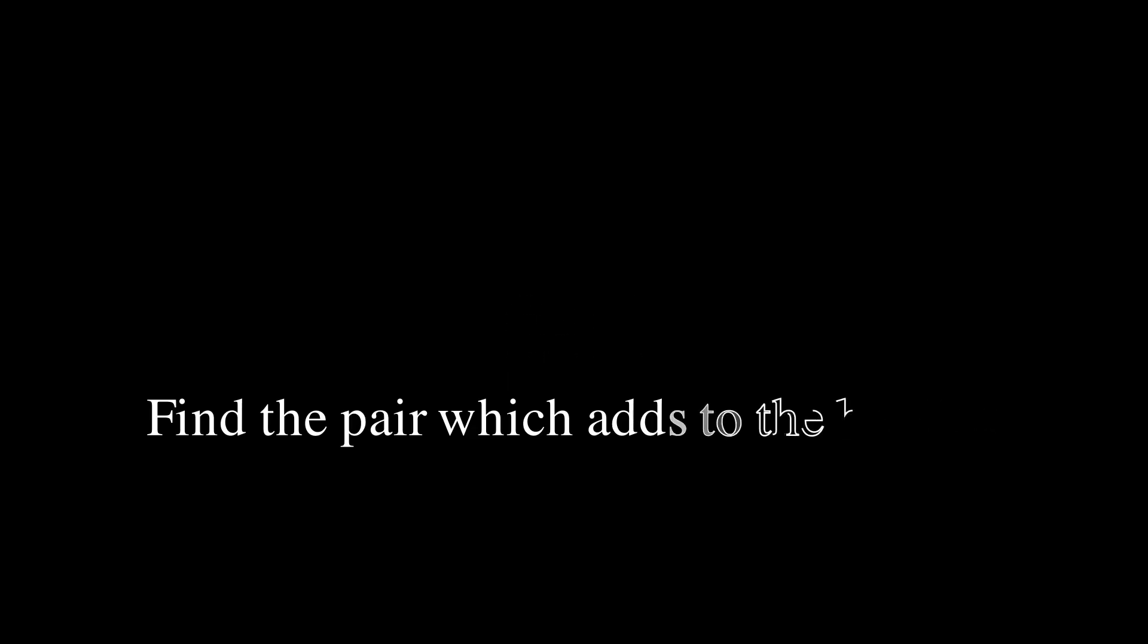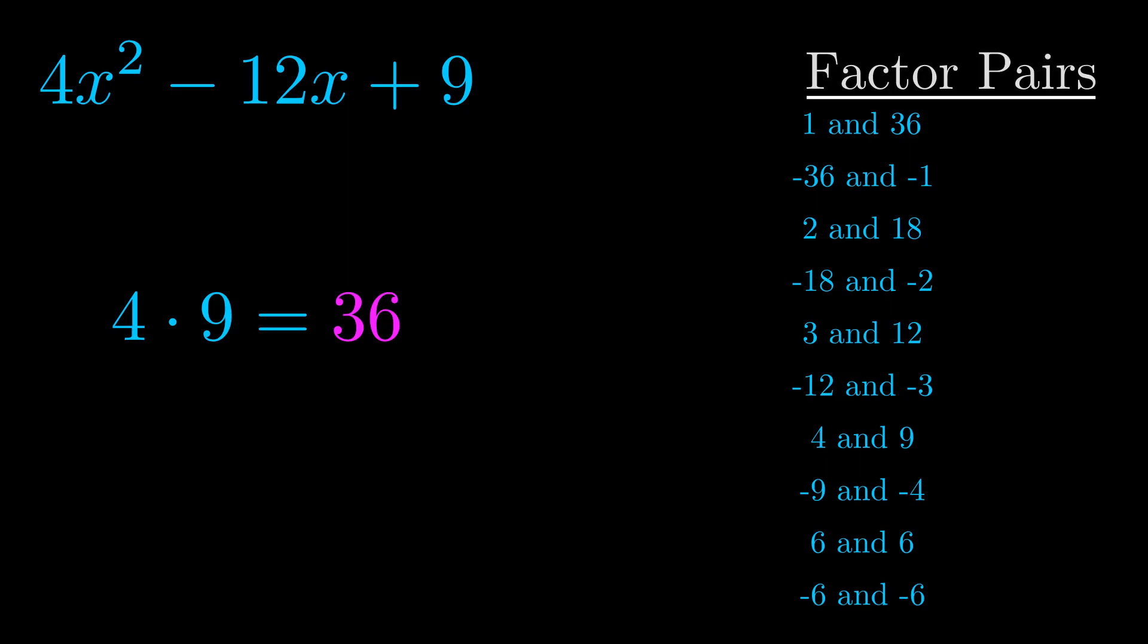The b value is the coefficient on the x term. That's the middle term, the one that we haven't done anything with yet. And really this is the only factor pair that we need.